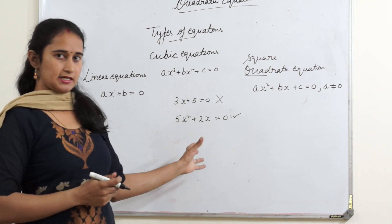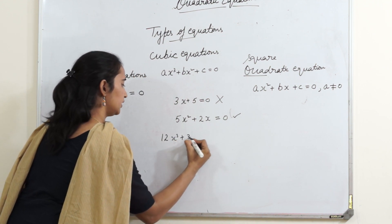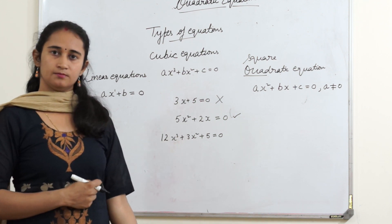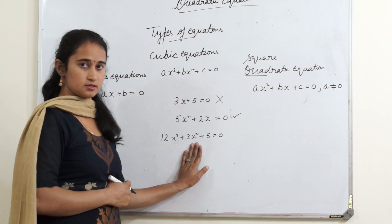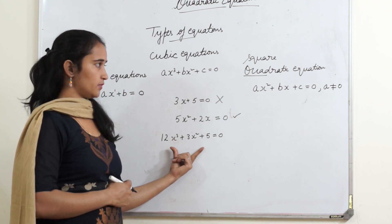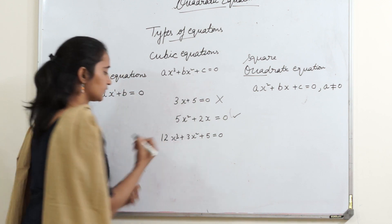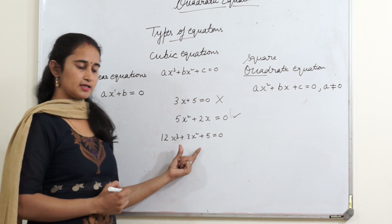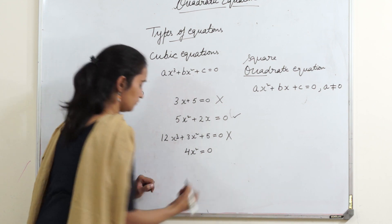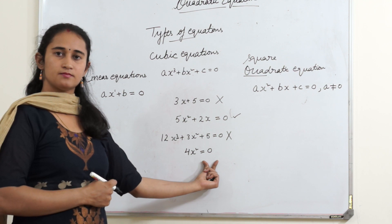I hope you are clear about quadratic equations. Let's take one more example. If I write 12x cubed plus 3x squared plus 5 equals to 0 — is this a quadratic equation? There is a square term, but there is a higher degree than 2, that is 3. So the condition does not satisfy, because a quadratic equation requires highest degree 2. Here the highest degree is 3, so this is a cubic equation, not a quadratic equation. What about 4x squared equals to 0? Yes, because here the highest degree is 2.